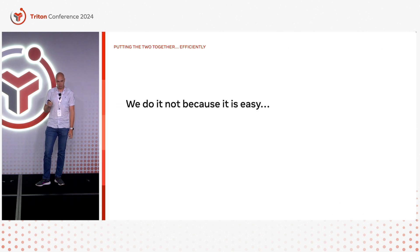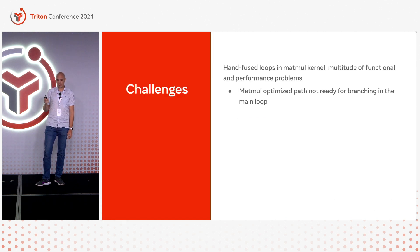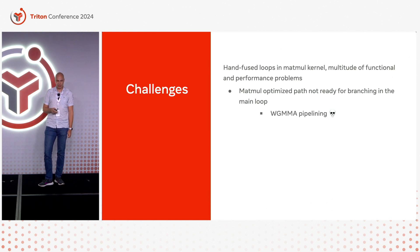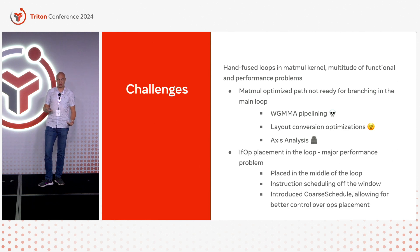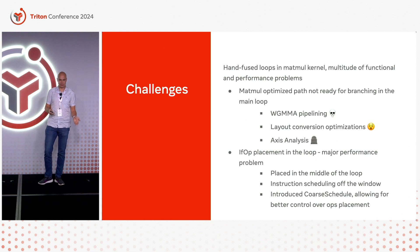But you know what they say: we do not do it because it's easy, but because we thought it would be easy. Obviously we hit a massive amount of problems. Our matmul-optimized code was not prepared for any fancy control flow in the main loop. There were bugs and inefficiencies in our other pipelining components, layout conversion optimizations, axis analysis, and many more. We also needed a slightly bigger rework of the schedule builder to allow for control over placement of if-blocks in the loop to help the instruction scheduler. If you're interested in any of it, let me know after the talk.